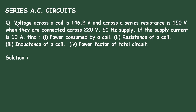Series AC Circuits problem: voltage across a coil is 146.2V and across a series resistance is 150V when they are connected across 220V 50Hz supply. If the supply current is 10A, find: number 1 power consumed by the coil, number 2 resistance of the coil, number 3 inductance of the coil, and number 4 power factor of the total circuit.